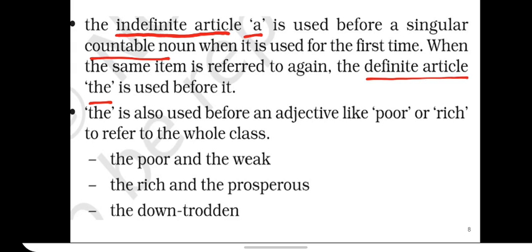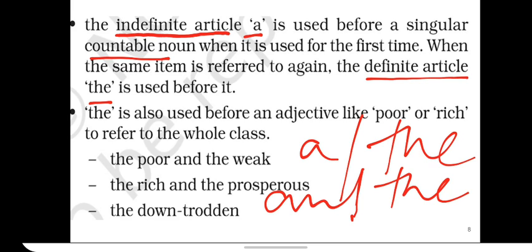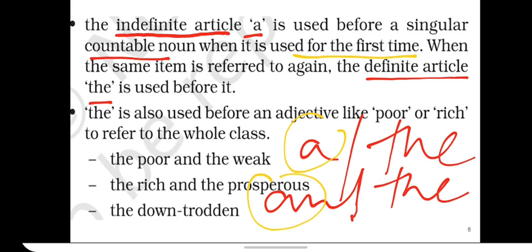Today's lesson will be how to use A and then change it into THE, or how to use AN and then change it into THE. When a noun is used for the first time, we use A or AN depending on the sound of the noun. But when the same noun is referred to again — repeated in the paragraph or essay — we use THE before it.